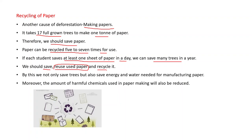For example, newspapers that come to our home — don't destroy them, save them and give them to the person who collects newspapers for recycling. You can also get money from that person, known as the kabadwala. By doing this we not only save trees but also save the energy and water needed for manufacturing paper.